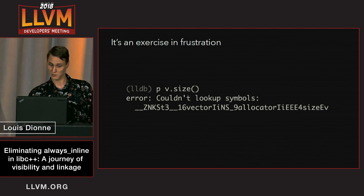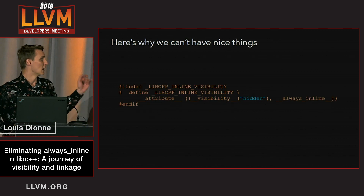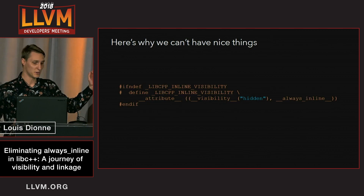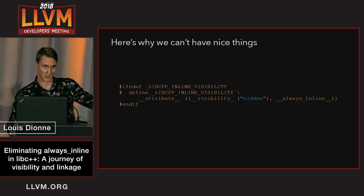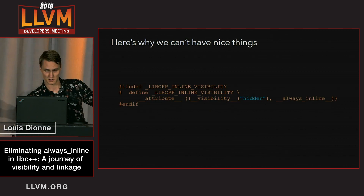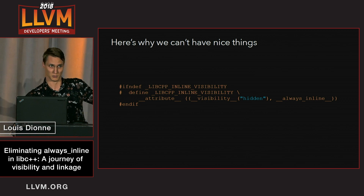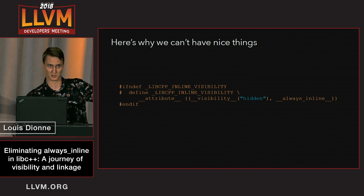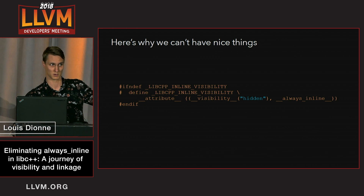The reason for that is this: _LIBCPP_INLINE_VISIBILITY actually expands to two things — visibility hidden, so it applies two attributes: visibility hidden but also always_inline.